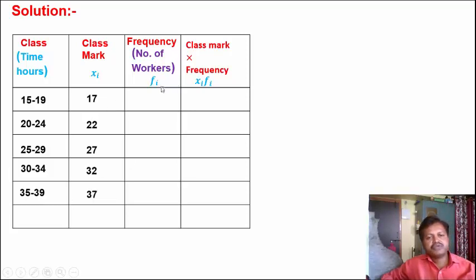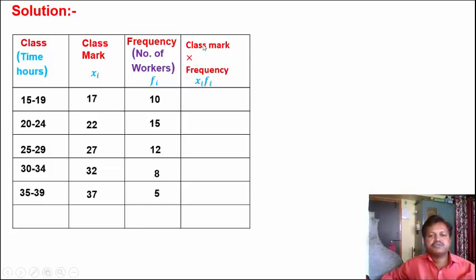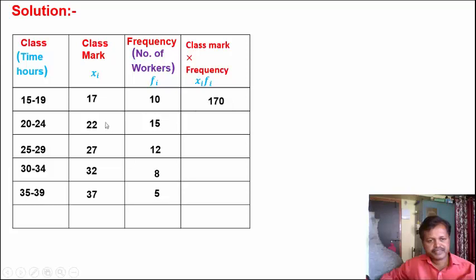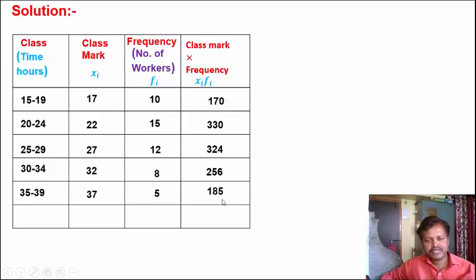Now write the number of workers, that is the frequency. The frequencies are: 10, 15, 12, 8, and 5. In the last column, calculate the product of class mark and frequency, that is Xi into Fi. So: 17 × 10 = 170, 22 × 15 = 330, 27 × 12 = 324, 32 × 8 = 256, and 37 × 5 = 185.